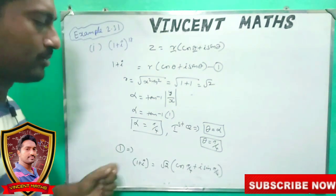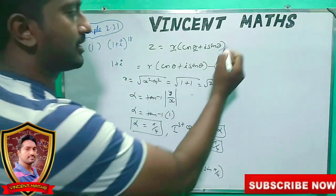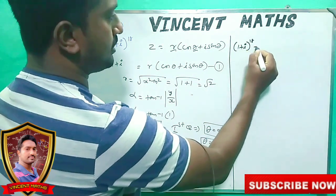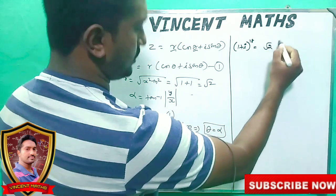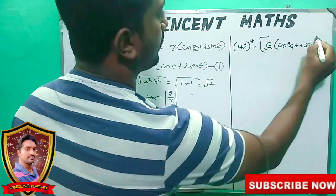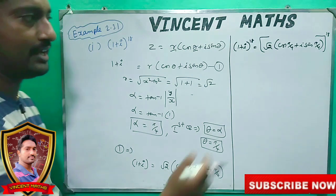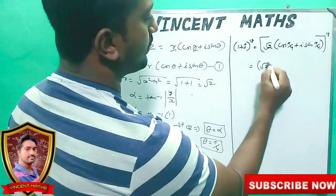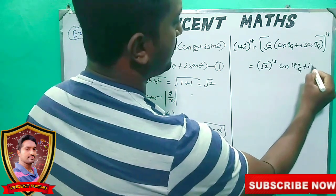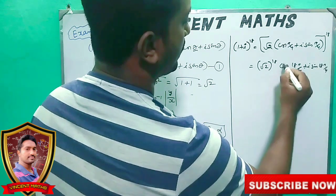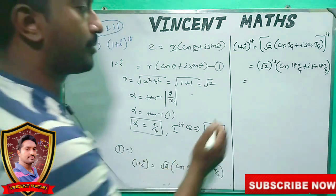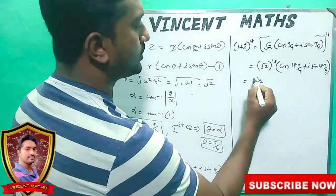Now we have to raise this to power 18. 1 plus i power 18 equals root 2 into cos pi by 4 plus i sin pi by 4, whole power 18. If we substitute here, root 2 power 18 times cos pi by 4 plus i sin pi by 4, whole power 18.